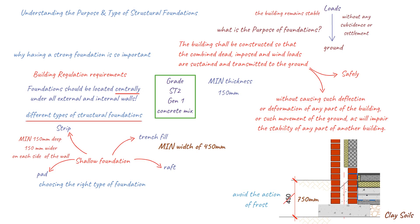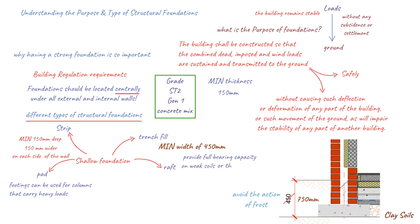BS 5328 Part 1 ST2 has a compressive strength of 10 N per square millimetre. GEN1 is a designated mix; BS 5328 Part 1 Section 5 specifies the mix, and the mix strength is also 10 N per square millimetre. Pad footings can be used for columns that carry heavy loads, while raft footings provide full bearing capacity on weak soils, or where there is a likelihood of differential settlement due to changes in the soil or moisture.